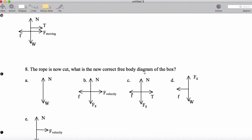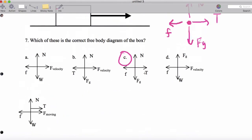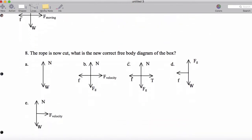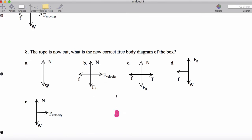Now if we cut the rope, it actually turns out that we can simply take our free body diagram picture. Normal. Weight. Now that the rope's gone, that force is completely gone, we have no more tension, and it's just the friction backwards.